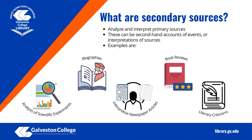So if primary sources are first-hand accounts, you can probably guess that secondary sources will be second-hand accounts. However, secondary sources can also be interpretations or analysis of primary sources. Examples of this are analysis of scientific experiments, biographies, interpretive newspaper articles, book reviews, and literary criticisms.